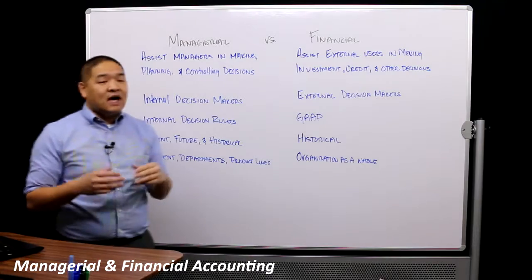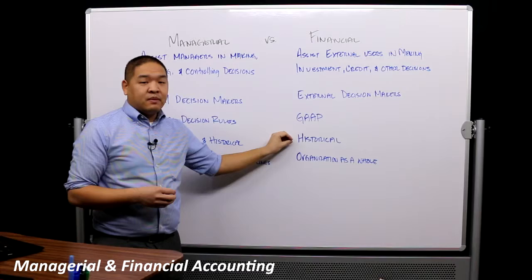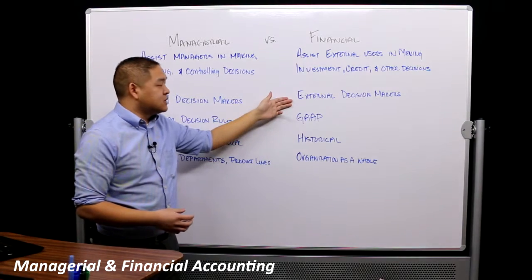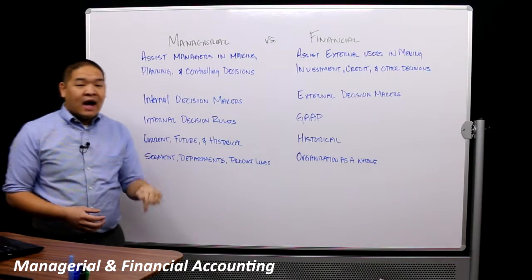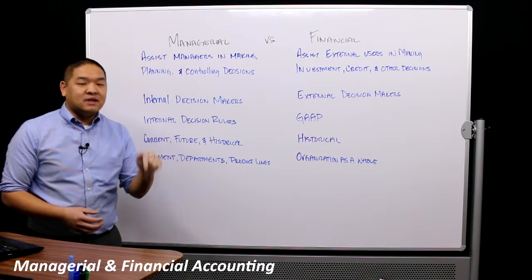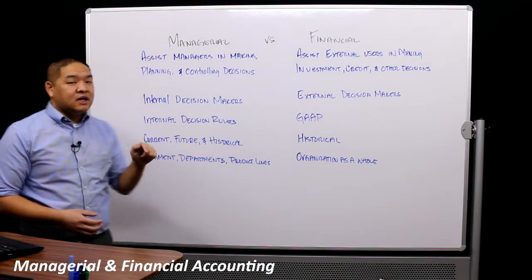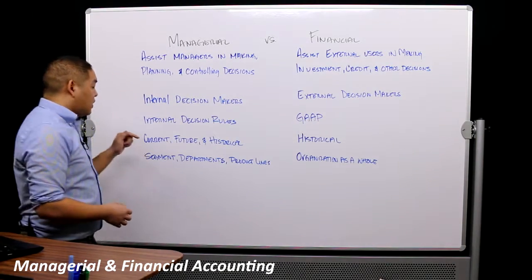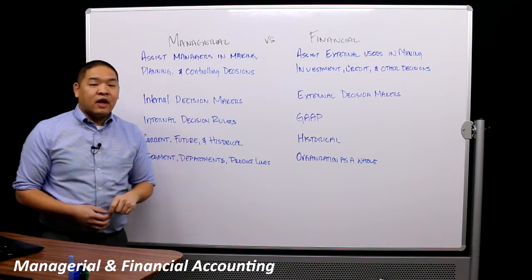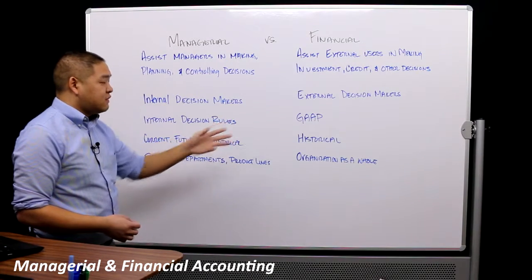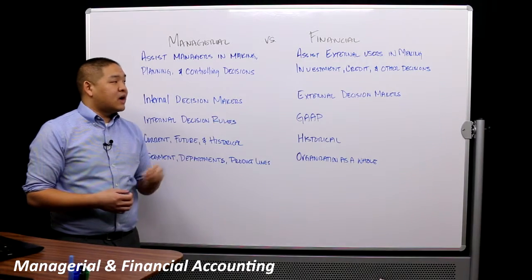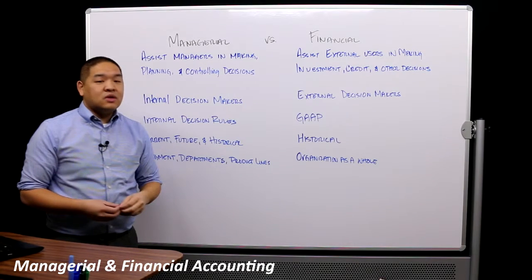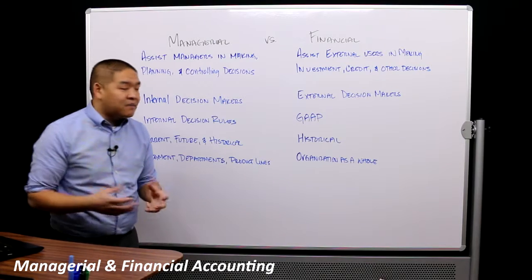From a time-stamp standpoint, financial accounting is all about historical information — everything that has passed is put into a report and given to external decision makers. With managerial, it's about what's happening now — last week's data to make this week's decisions, or current activity. We're also concerned about the future, so you get a lot of forecasts and projections. We don't use forecasts in financial accounting because if an organization puts out a forecast that others treat as fact, it can expose the organization to significant liability.